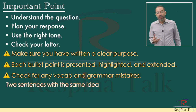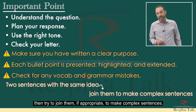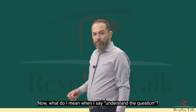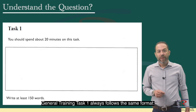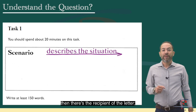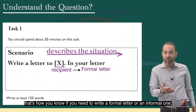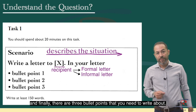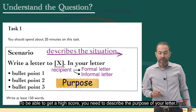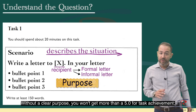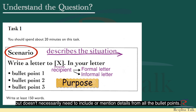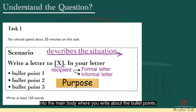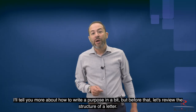General Training Task 1 always follows the same format. There is always a scenario describing the situation, then there is the recipient of the letter — that's how you know if you need to write a formal or informal letter — and finally there are three bullet points you need to write about. To get a high score you need to describe the purpose of your letter. Without a clear purpose you won't get more than a 5 for task achievement. Your purpose statement needs to be directly relevant to the scenario, but it doesn't necessarily need to include details from all the bullet points. Make sure your purpose naturally leads into the main body.